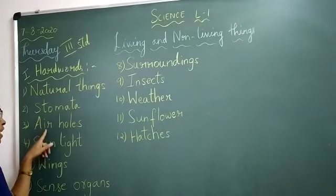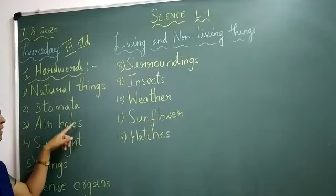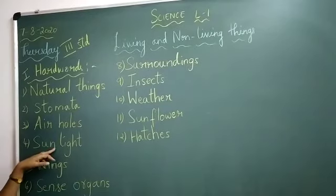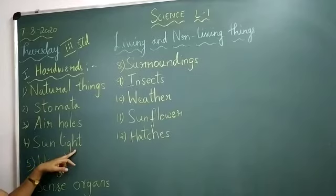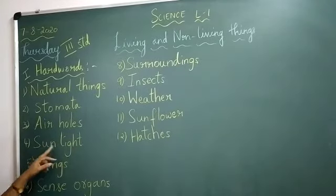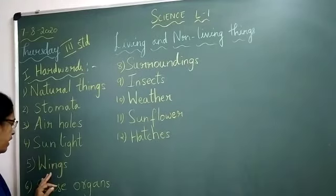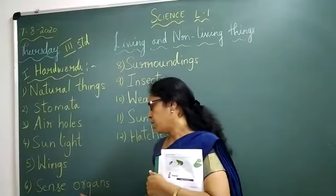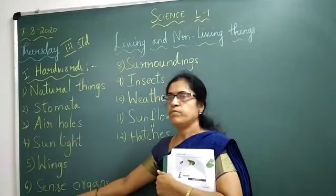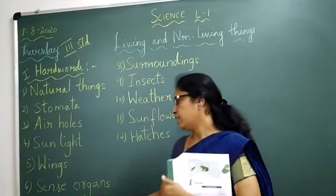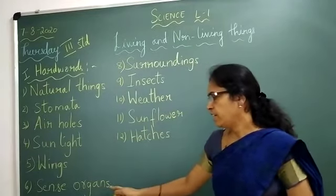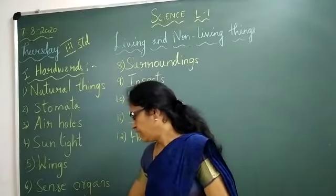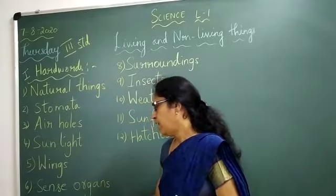Air holes. A-I-R-A-H-O-L-E-S, air holes. Fourth one: sunlight. S-U-N, L-I-G-H-T, sunlight. Fifth one: wings. W-I-N-G-S, wings. Sixth one: sense organs. S-E-N-S-E, O-R-G-A-N-S, sense organs. Seventh one: shelter. S-H-E-L-T-E-R, shelter.